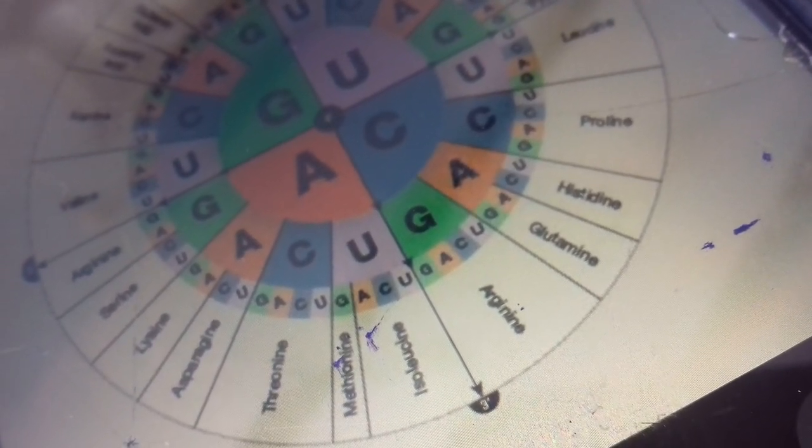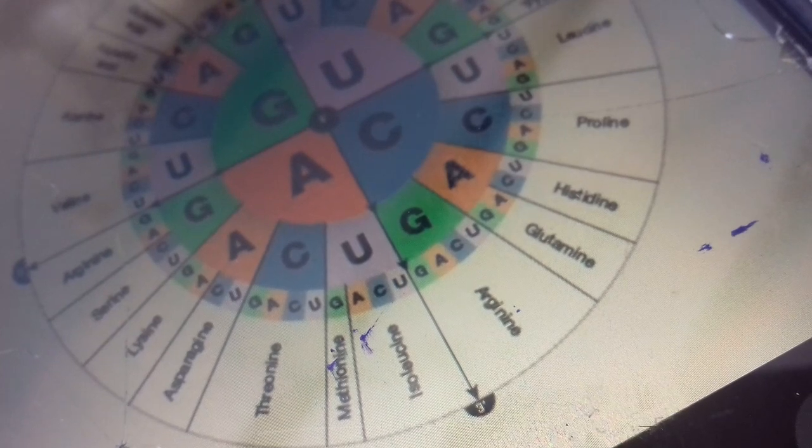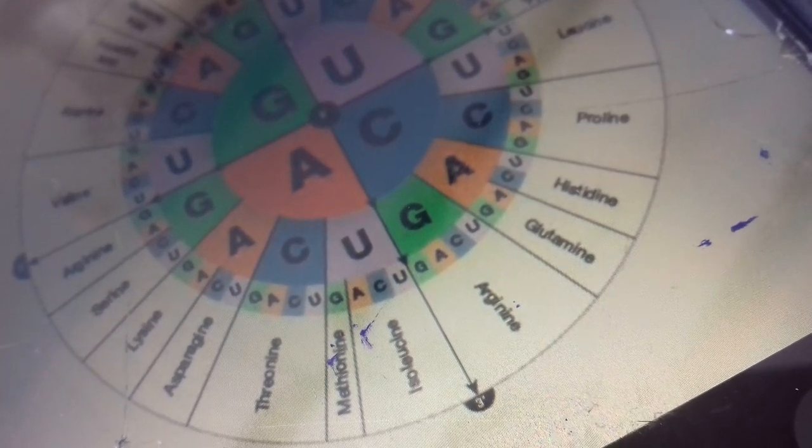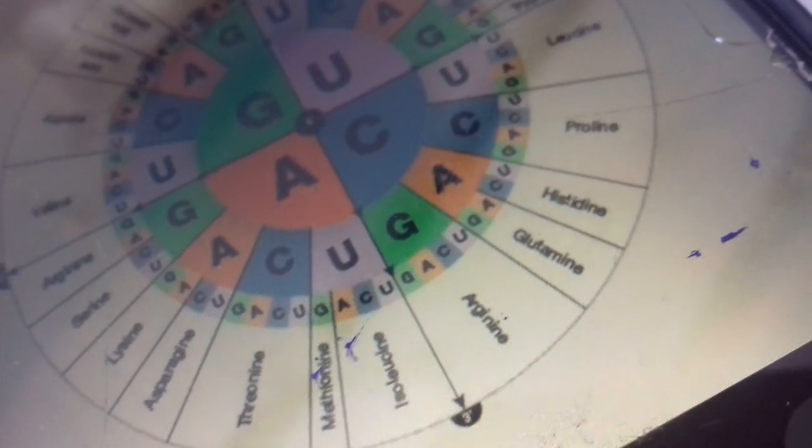Universal genetic code is found in all organisms except prokaryotes, mitochondria, and chloroplast.